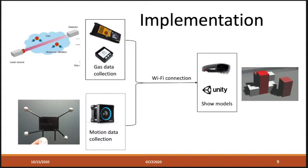In our system, there are two parts of input. We include the gas data collection, which can collect all the data information we need of the target gas, and the motion data collection, which can collect the motion data of the user to calculate the gas distribution position.